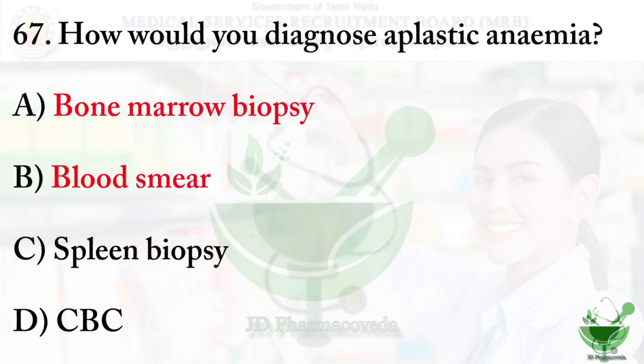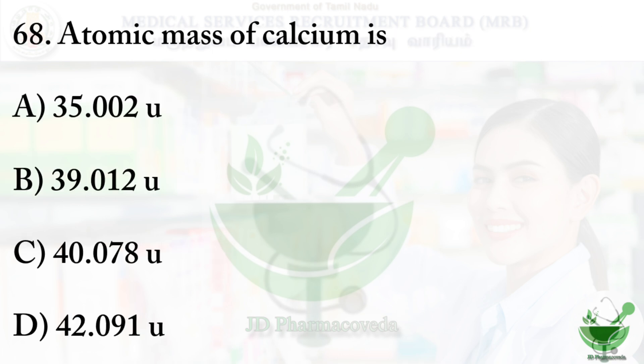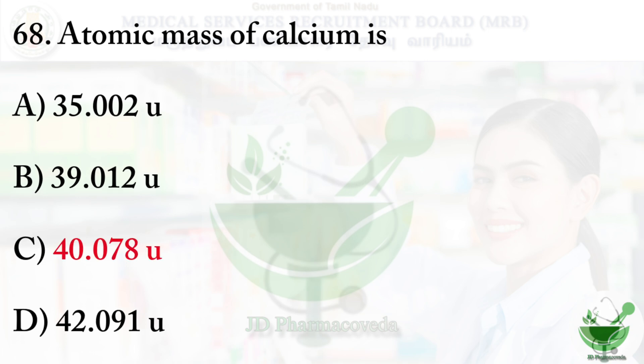Question number 68: the atomic mass of calcium is — option A: 35.002 units. Option B: 39.012 units. Option C: 40.078 units. Option D: 42.091 units. The right option is option C, 40.078 units.